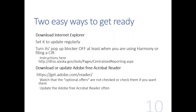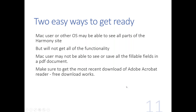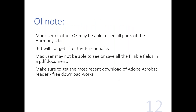You should also download or update the free Adobe Acrobat Reader. When you do that, watch out for the optional offers — if you do not want them, just uncheck them. You can go to get.adobe.com/reader. PDF documents are generated through reports in Harmony, so you'll want Adobe Acrobat Reader to read them. If you are a Mac user, you may not be able to see or save all the fillable fields in a PDF document. Make sure to get the most recent download of Adobe Acrobat Reader — the free download works just fine.